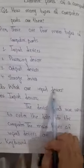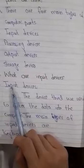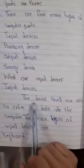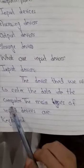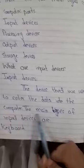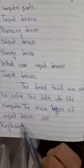Question number 2: What are input devices? Answer: First you give heading input device, then on next line, the device that we use to enter the data into the computer. The main types of input devices are keyboard, scanner, mouse, and joystick.